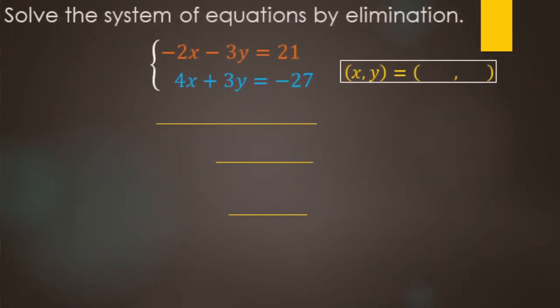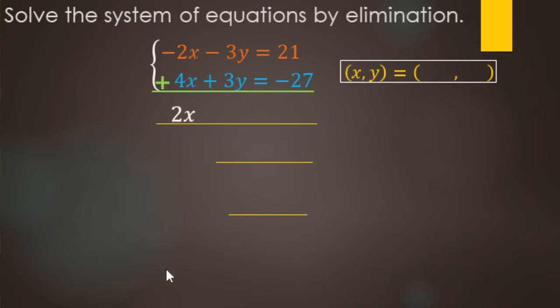Solve this system by elimination. Elimination is using addition to eliminate a variable, so we're just going to add these two equations together and add straight down. Negative 2x plus 4x is going to be positive 2x. Subtract 3y from 3y makes zero y's. 21 minus 27 is going to make negative 6.